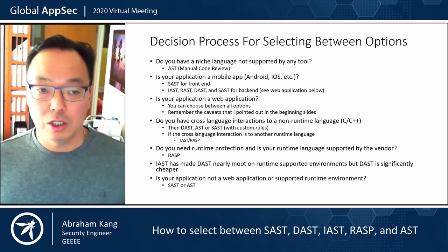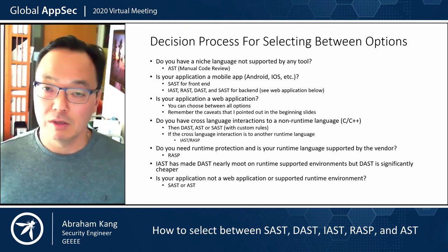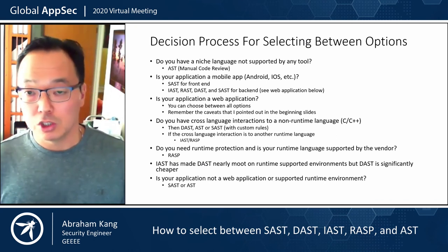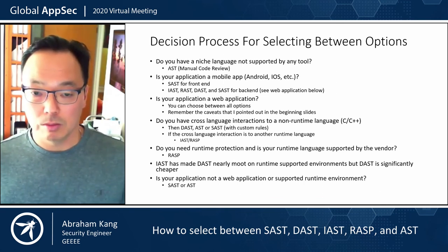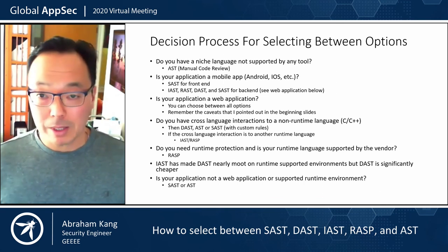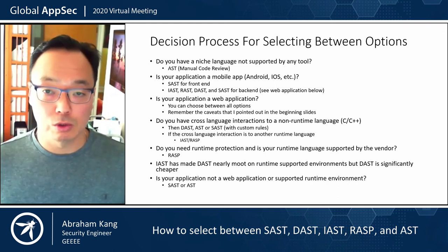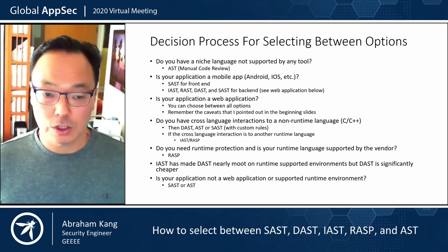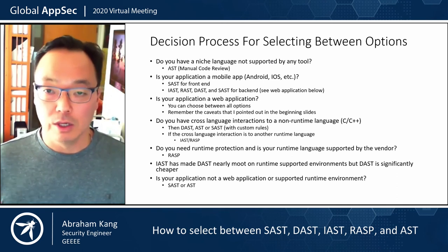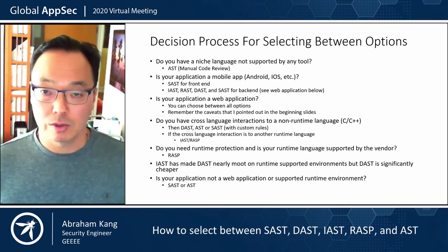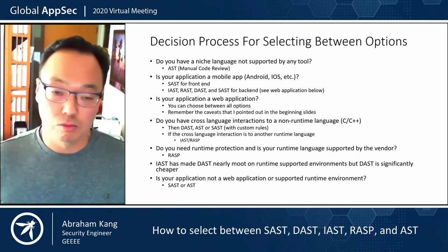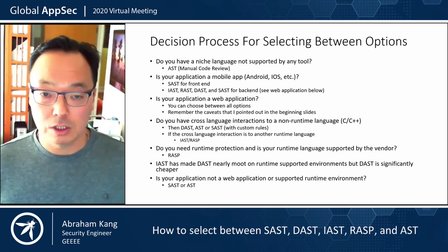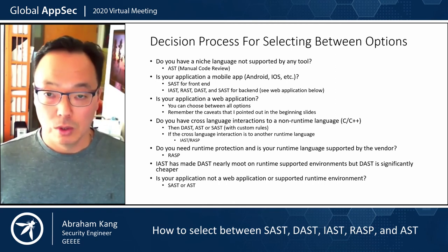The next question to ask is: is your application a mobile app? If it is, you can use static analysis for the front end, and for the back-end components you can use pretty much any of the other tools. If it's a web application, web applications are traditionally pretty well supported, but you still need to know if the tool supports your framework and the language. Python is kind of notorious for having poor support, and sometimes Ruby can fall in that bucket — though there are some open source tools like Brakeman for Ruby that are actually pretty decent. So know what you're getting into.